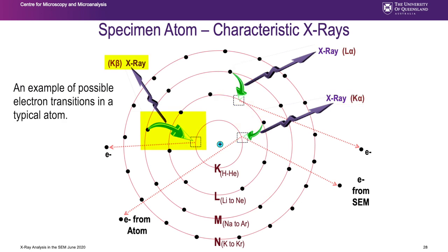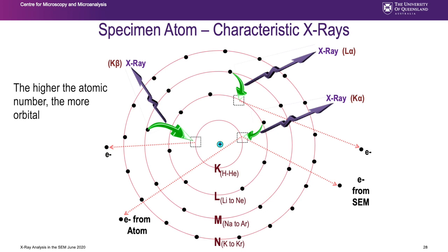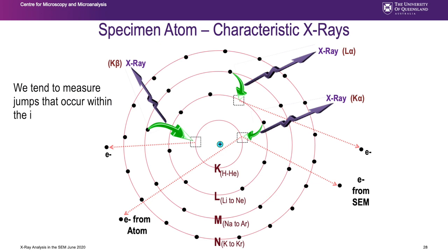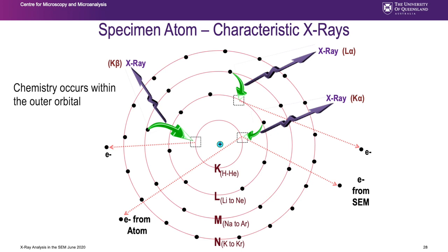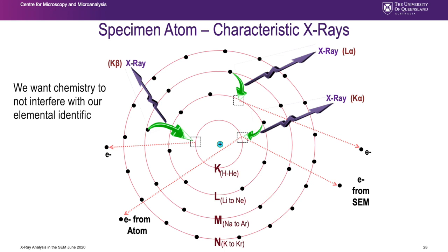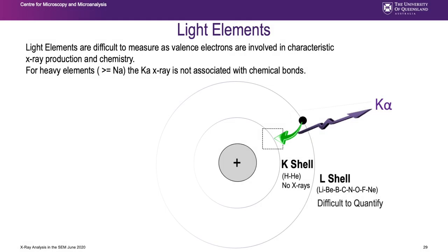The higher the atomic number Z, the more orbitals and the more jumps possible. We generally try to measure jumps that happen in the inner orbitals because the outer orbitals - the valence shell - are where chemistry happens, and we want chemistry not to interfere with our elemental identification.